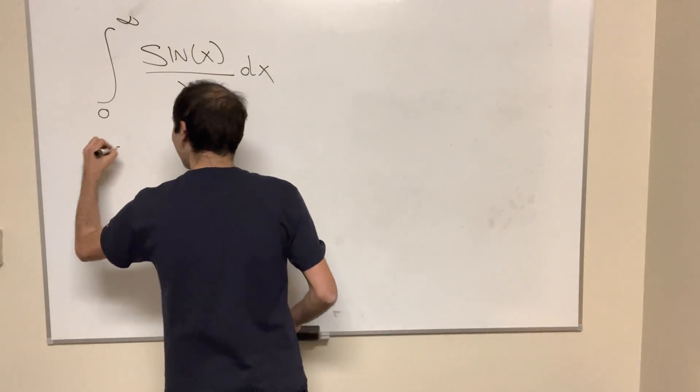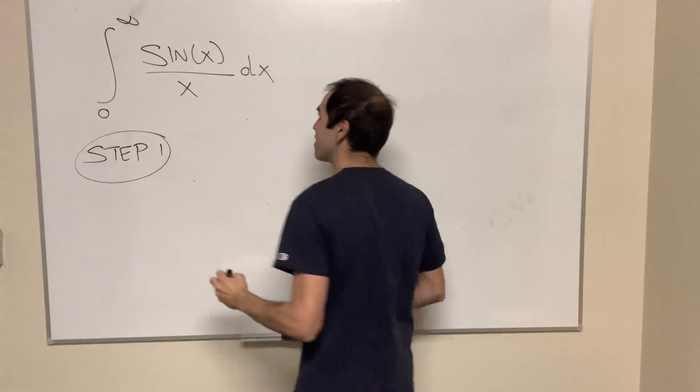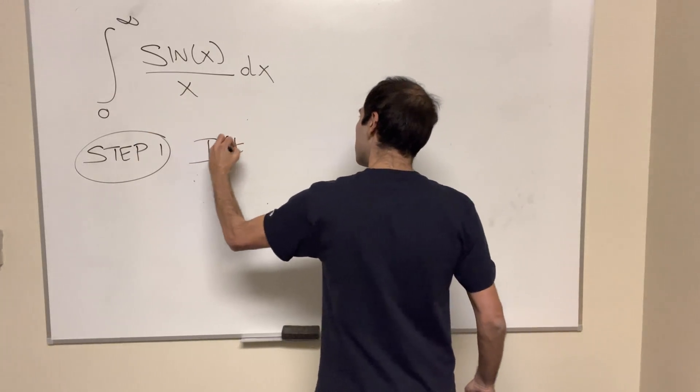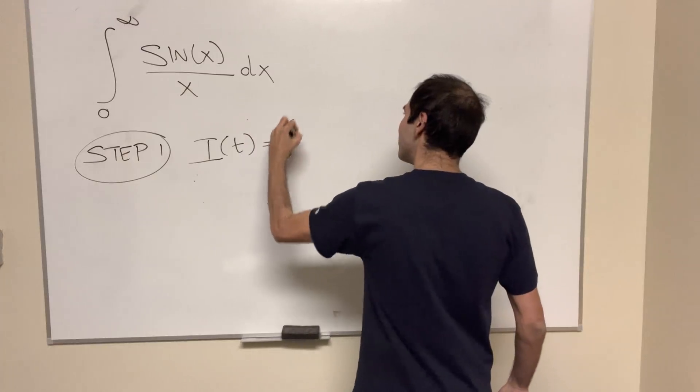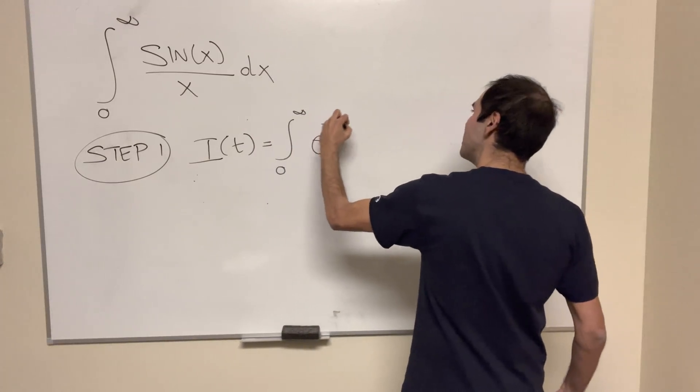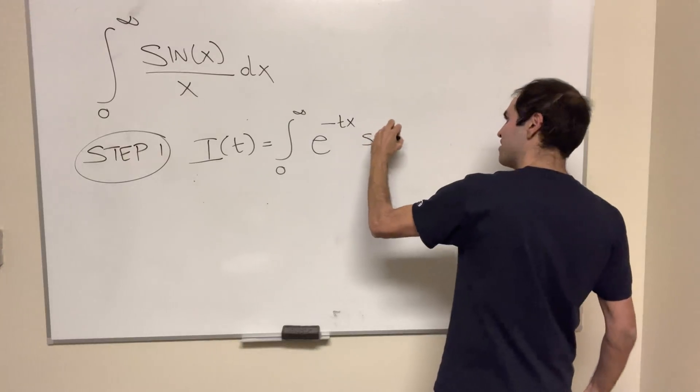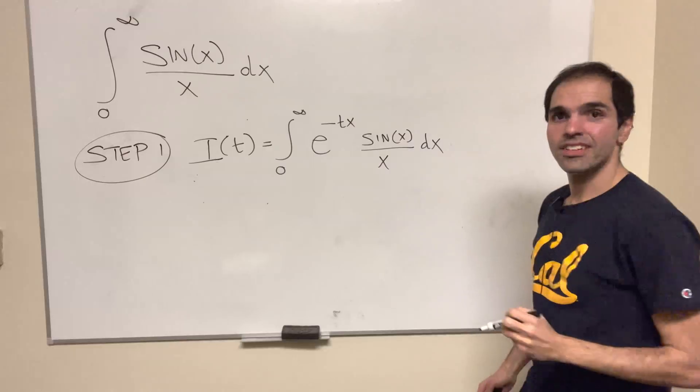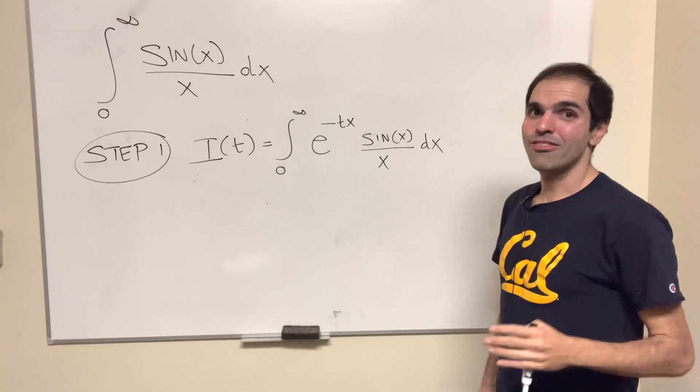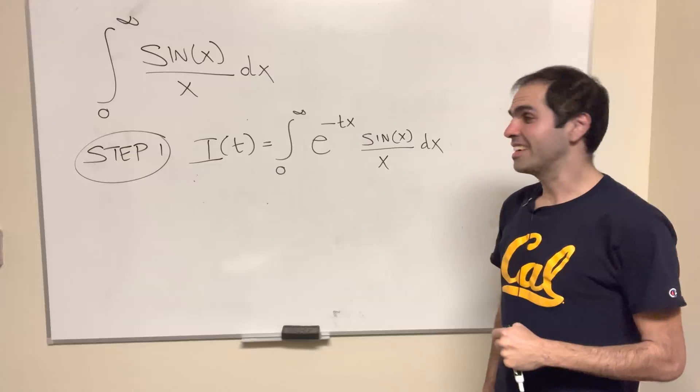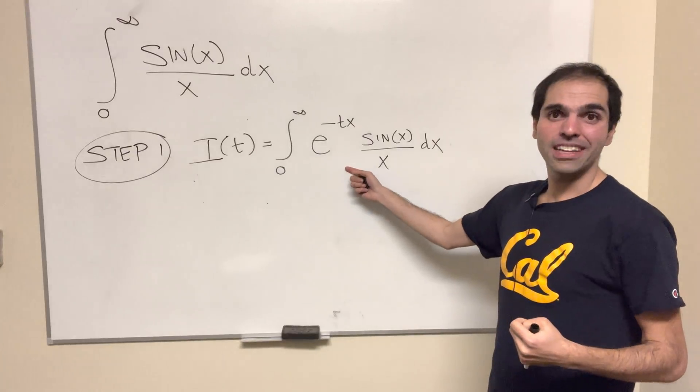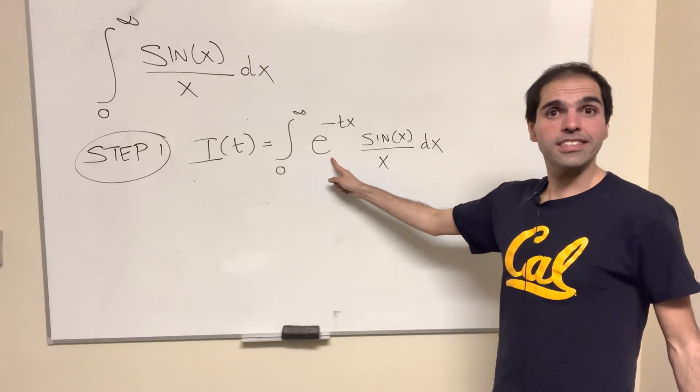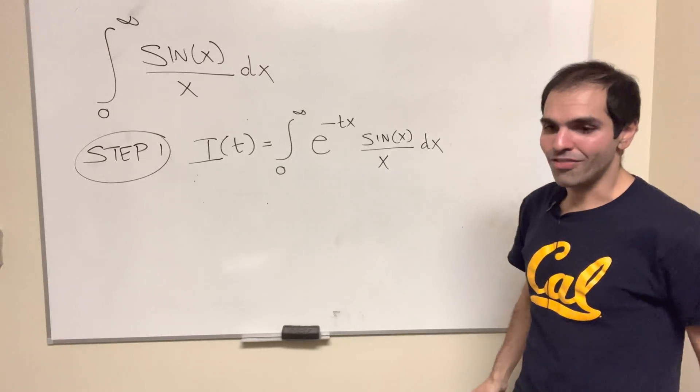Okay, and in order to do that, we want to use a Feynman trick. So let i of t be the integral from zero to infinity of e^(-tx) sin(x)/x dx, because as they say in French, pourquoi faire simple si on peut faire compliqué? Why make this easy if we can make it complicated? And indeed, weirdly, using this exponential term, we can simplify this integral.